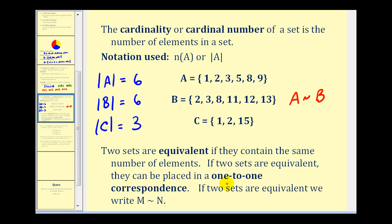Now this idea of a one-to-one correspondence just means that for every one element in set A, we could match it with one element in set B. So we could match one with two, two with three, three with eight, five with eleven, eight with twelve, and nine with thirteen, illustrating the one-to-one correspondence.